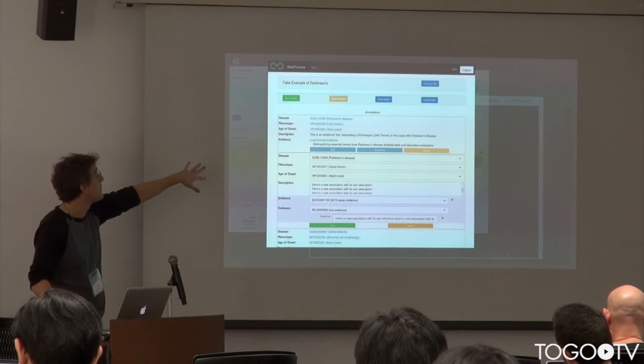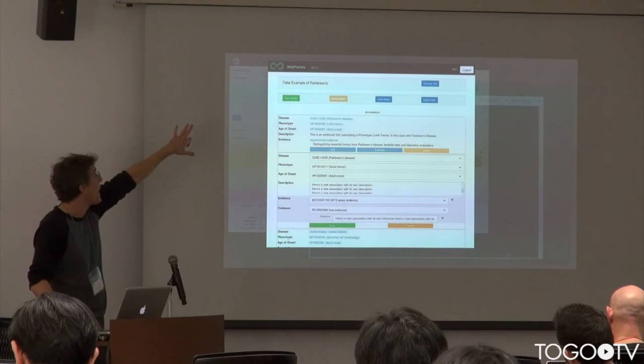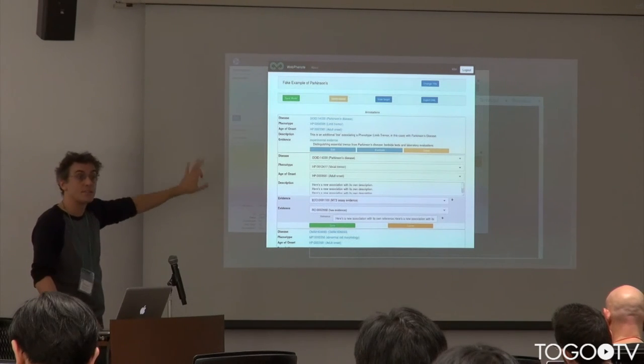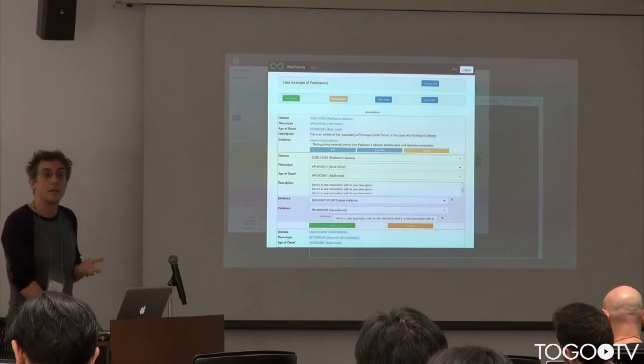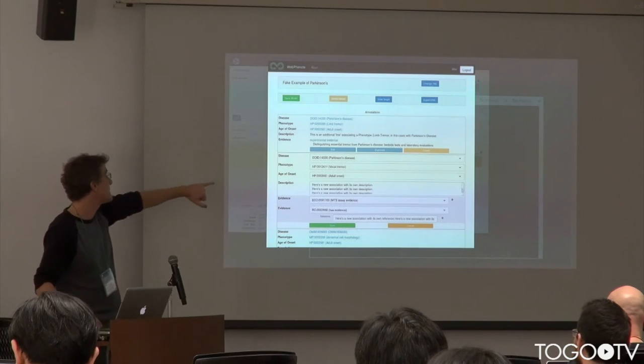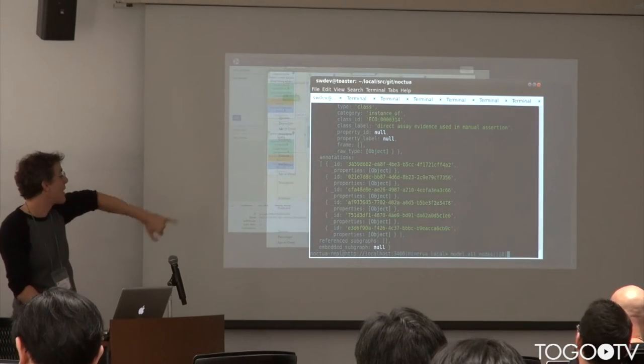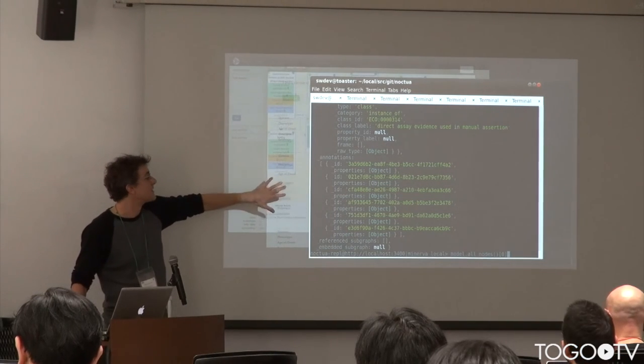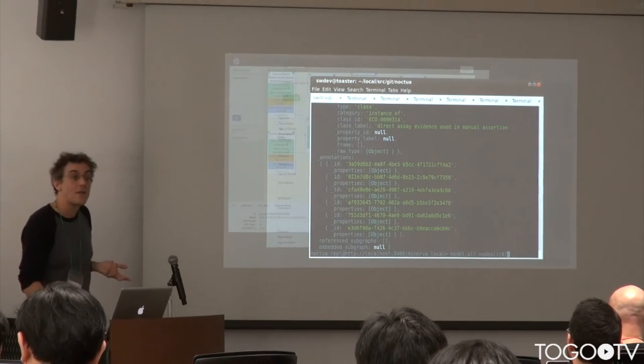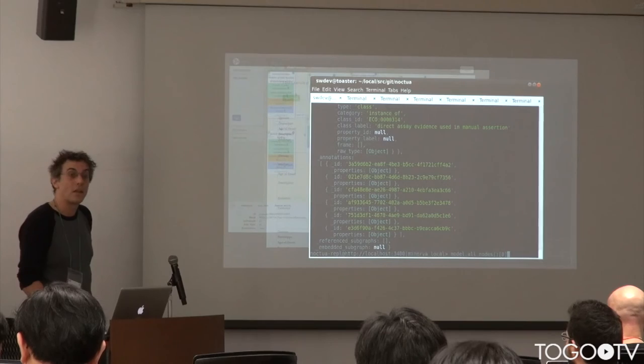But using this JavaScript API, we already have several clients. We have a graph editor client for the Monarch initiative. We have WebPhenote, which is tabular. It's designed to be working more with medical, rare disease data, stuff like that. We also have REPL or REPEL, depending on how you want to say it. That's a much lower way of doing it for noodling around. If you want to just work on developing the rich API.